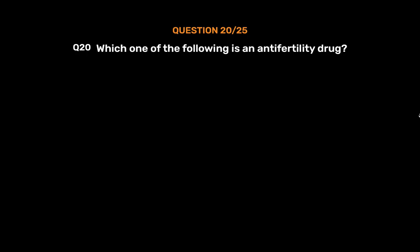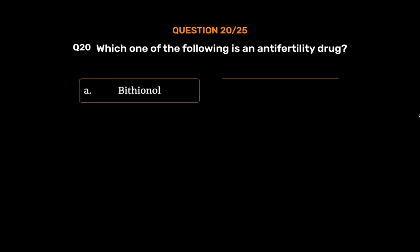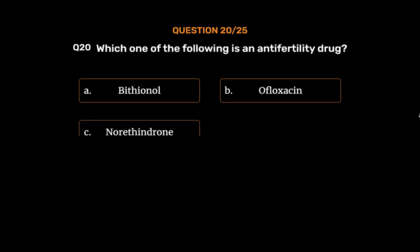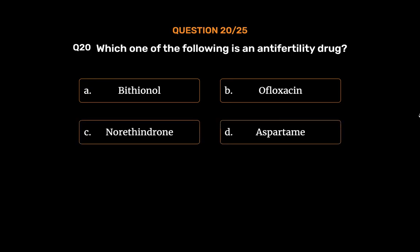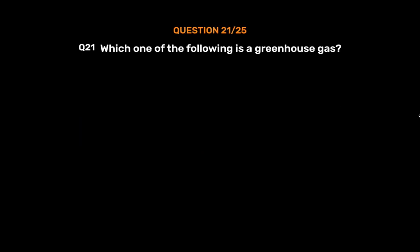Question number 20. Which one of the following is an anti-fertility drug? Option A, bithionol; Option B, ofloxacin; Option C, norethindrone; Option D, aspartame. The correct answer is Option C, norethindrone.